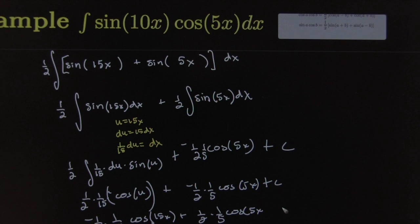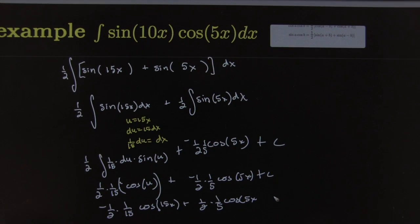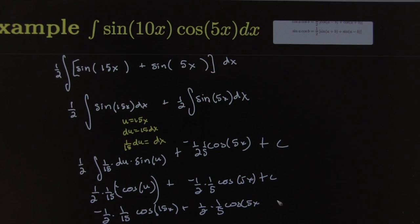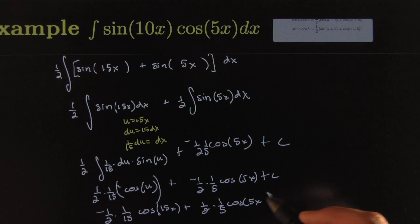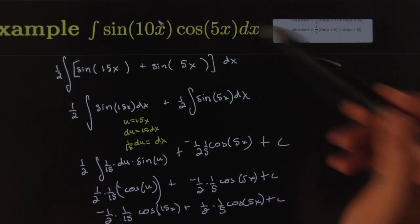Plus a constant. That's how you do it. This is really the crucial step here - using this identity.